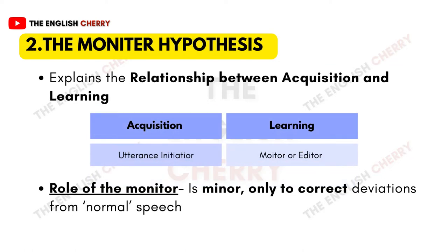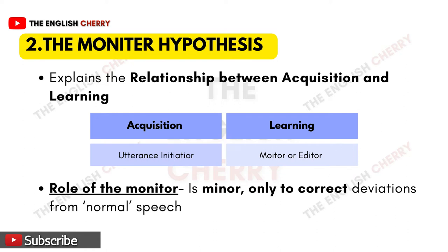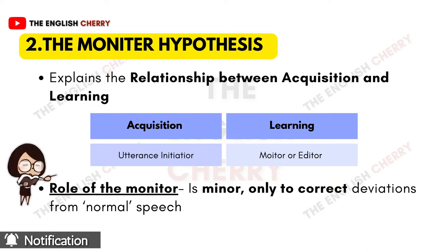Next is the monitor hypothesis. This hypothesis explains the relation between acquisition and learning and shows how learning has influence over acquisition. According to Krashen, the acquisition system is the utterance initiator — with acquisition a person learns to speak and pronounce, while the learning system performs the role of the monitor or editor. Learning guides and monitors us to use language in a systematic way, laying down grammar rules so that if we commit a mistake, it corrects us. It provides us time to think if we are performing correctly, but Krashen says the role of the monitor should be minor.